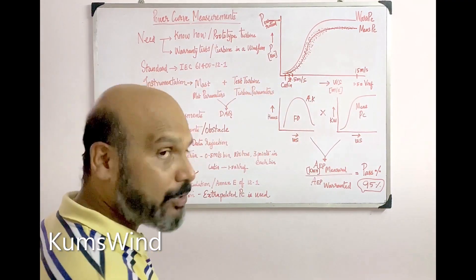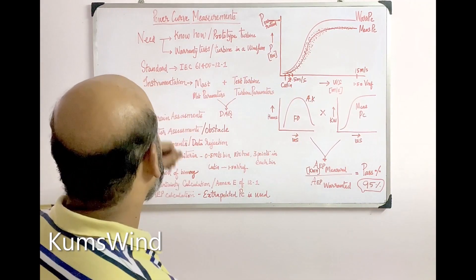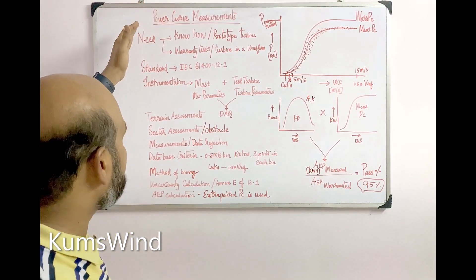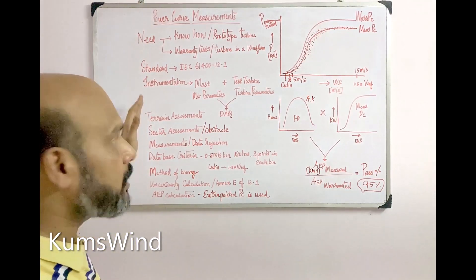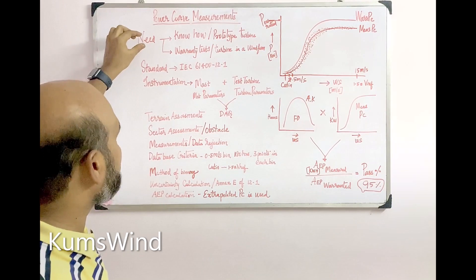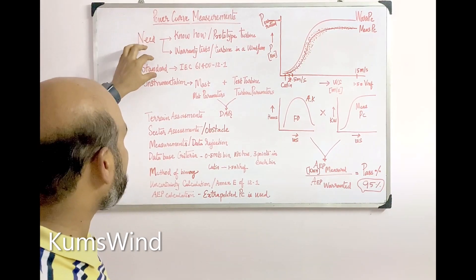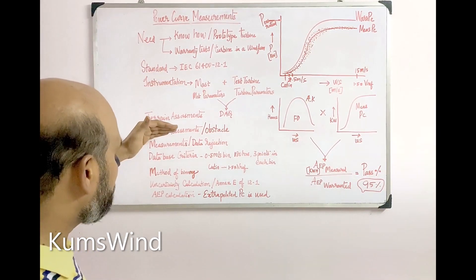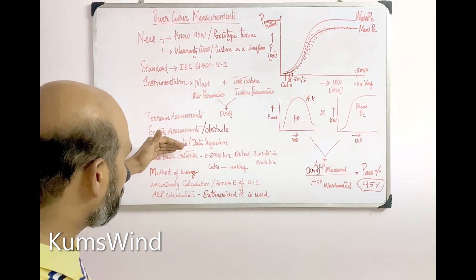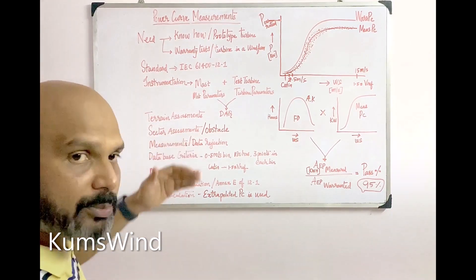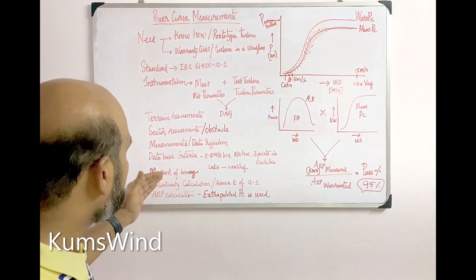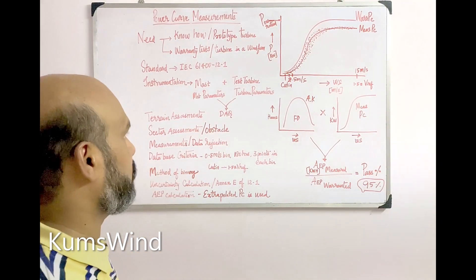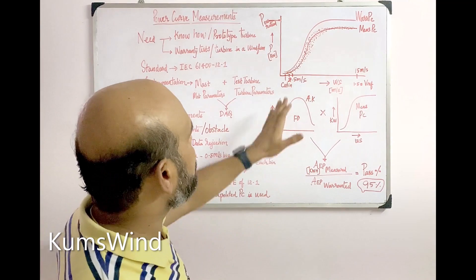The discussion is structured as follows: we will be discussing the need for power curve measurement, standards, instrumentation, terrain and sector assessments, the measurement process, data rejection, database fulfillment criteria, the method of binning, uncertainties, and finally the AEP calculation.